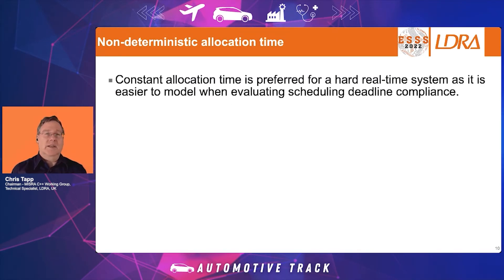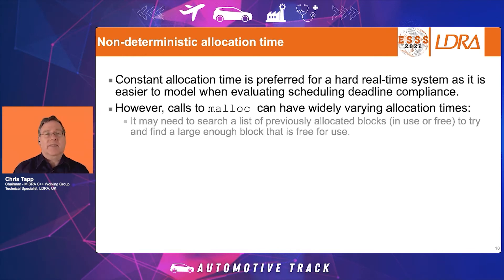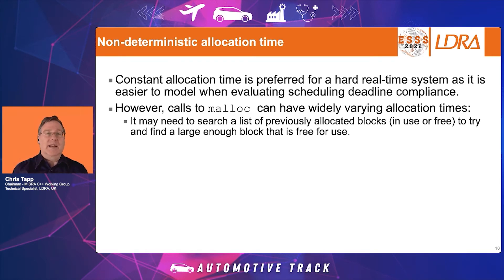This brings us to non-deterministic allocation time. Constant allocation time is preferred within a hard real-time system, as it makes it much easier to model scheduling deadline compliance and guarantee that real-time loops run at the expected frequency. However, as soon as we start having calls to malloc within the code, there is a chance of widely varying allocation times — for example, the memory allocation routines may need to search a list of previously allocated blocks, either in-use or free, to find a large enough block for malloc to return.